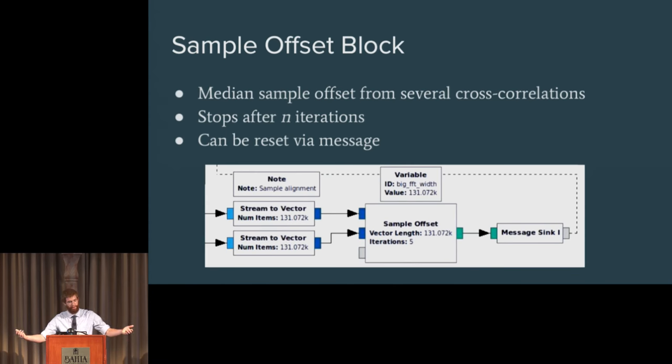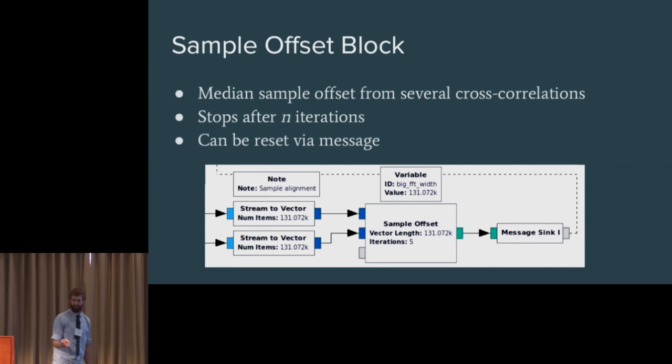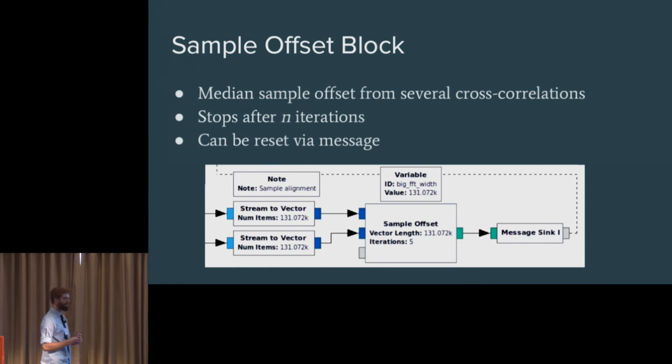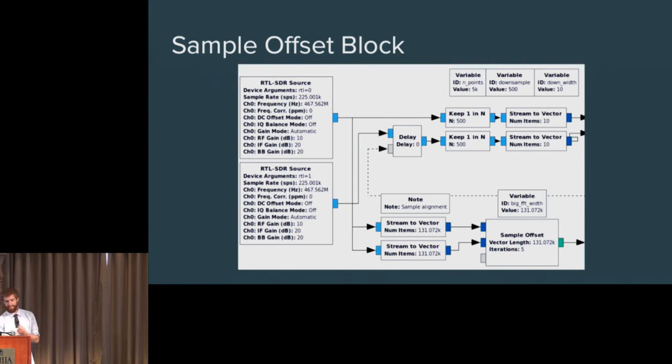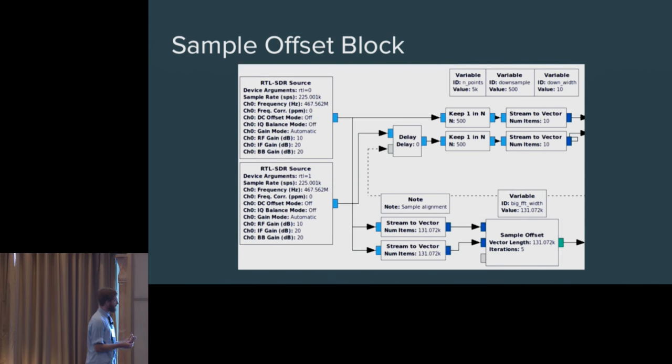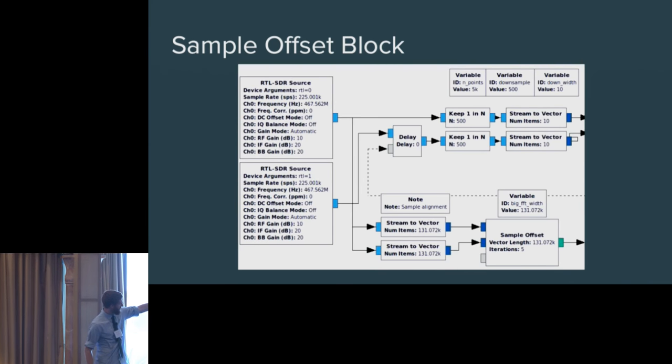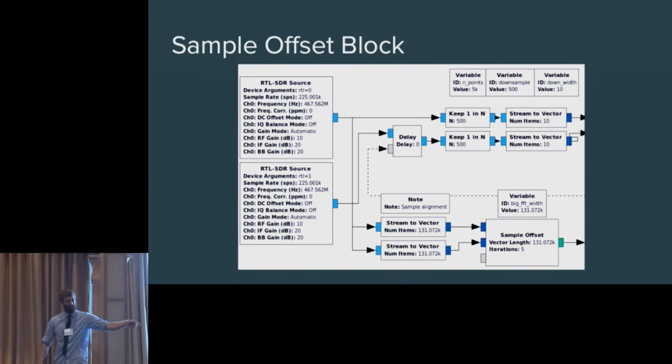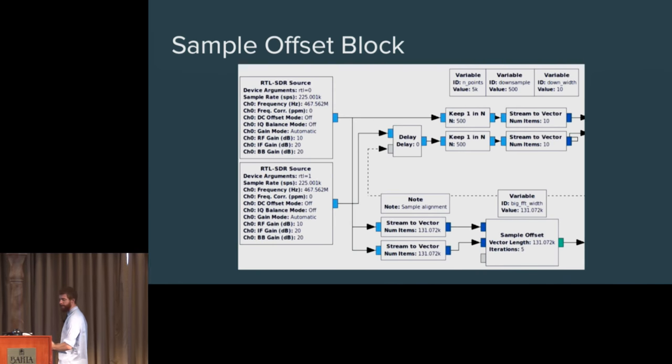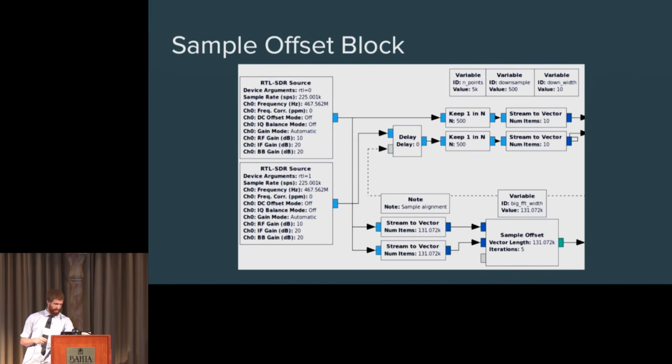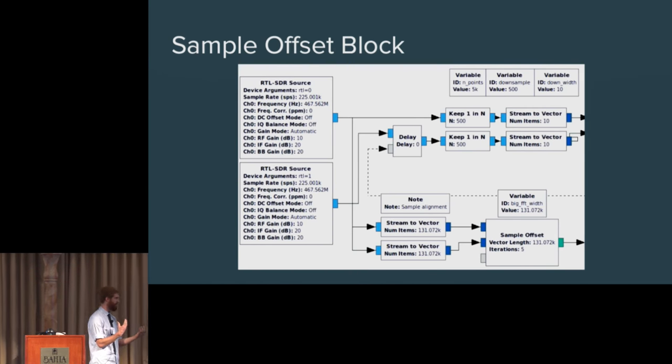The basic idea behind it is we're just going to do cross-correlation a couple times at the beginning, take the median peak values from it, find how far apart our two signals are, and then stop doing the computations. We don't need to waste our time doing this over and over again because they have the same clock, so they're not going to get farther apart. This sample offset block takes five iterations. We do five cross-correlations and we get this value that says, let's say it output the value 400. There's a peak at 400 in our cross-correlation. That means our two sample streams are 400 samples apart. We need to delay one of our sample streams by 400 samples, and then they'll be lined up.